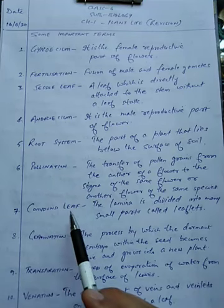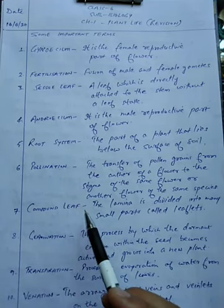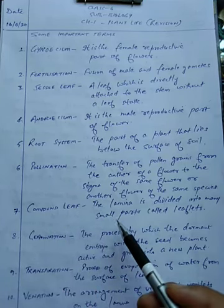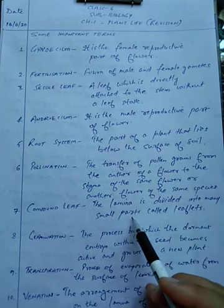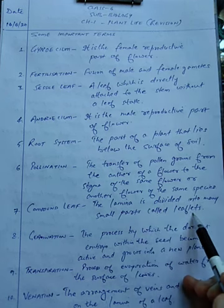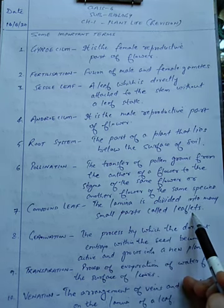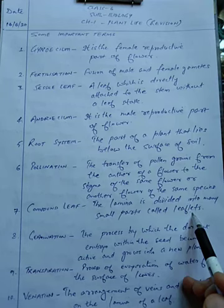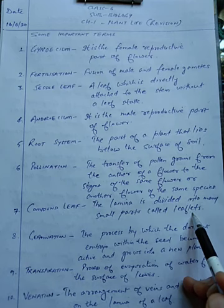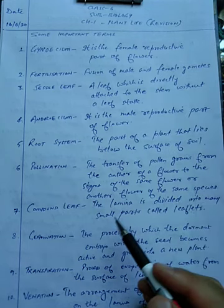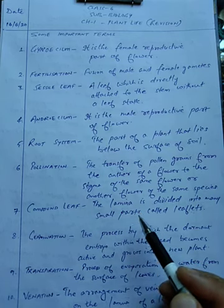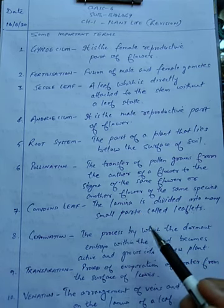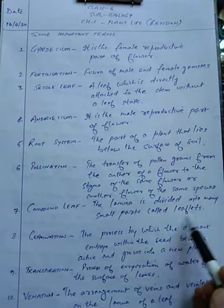Seventh is compound leaf. A compound leaf is a leaf in which the lamina is divided into many small parts called leaflets. Like in the case of tamarind or neem — the leaves you must have seen of these plants are compound leaves. In them, each leaf is divided into separate smaller parts, and those are called leaflets.